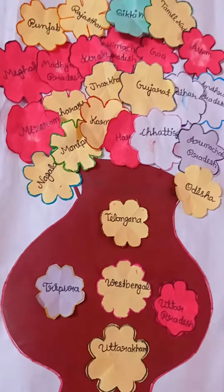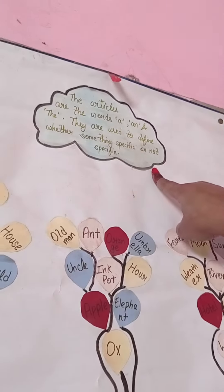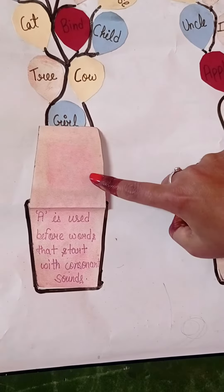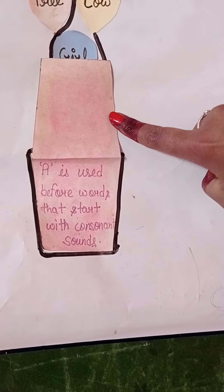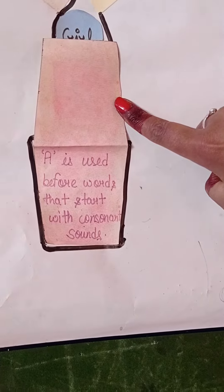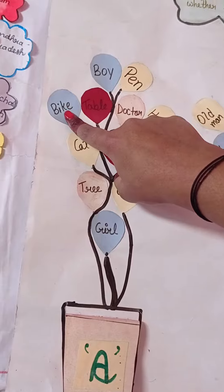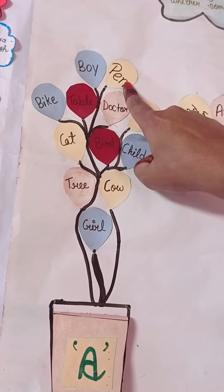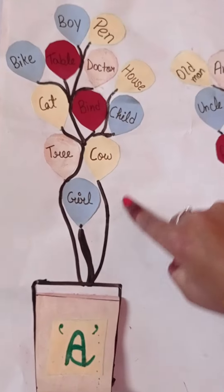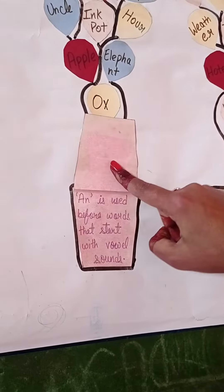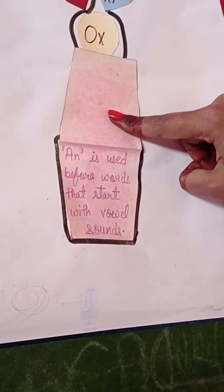There are three articles. 'A' is used before words that start with consonant sounds, such as bike, boy, pen, and table.